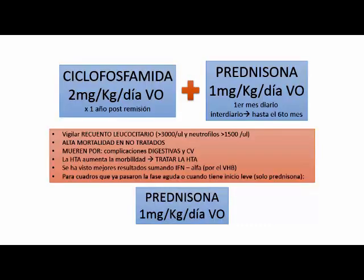El tratamiento es inmunosupresor: ciclofosfamida y prednisona. Estos pacientes tienen alta mortalidad si no son tratados; pueden morir por complicaciones digestivas y cardiovasculares. La hipertensión incrementa la mortalidad de estos pacientes debido a los aneurismas, que pueden producirse en vasos medianos y también en vasos cerebrales. Son pacientes que pueden tener como complicaciones ruptura de aneurismas o hemorragia subaracnoidea. En algunos casos cuando haya hepatitis B asociada, tratar con interferón al mismo tiempo.